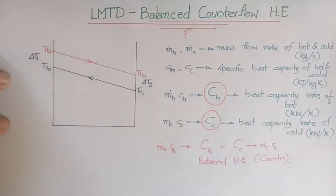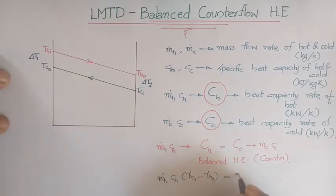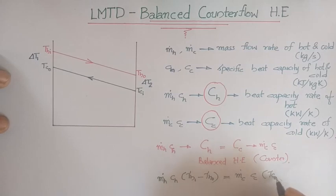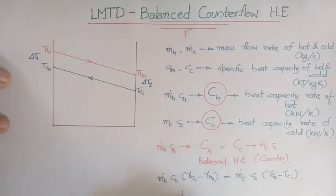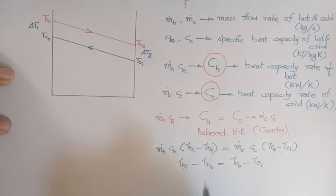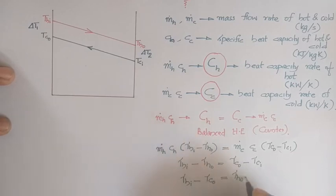For a balanced counter flow heat exchanger, heat lost by hot fluid is M-dot-H × c_H × (T_HI − T_HO), which equals heat gained by cold fluid: M-dot-C × c_C × (T_CO − T_CI). Since M-dot-H × c_H = M-dot-C × c_C, we get T_HI − T_HO = T_CO − T_CI, which can be rearranged to T_HI − T_CO = T_HO − T_CI.